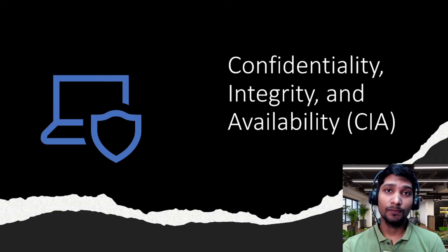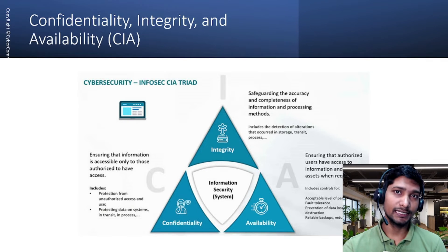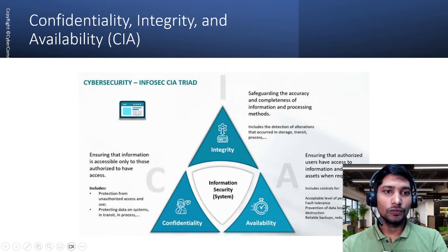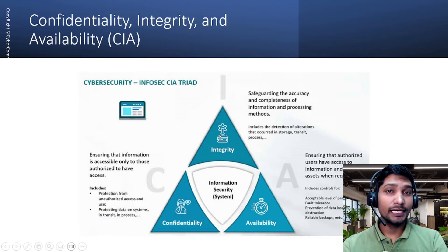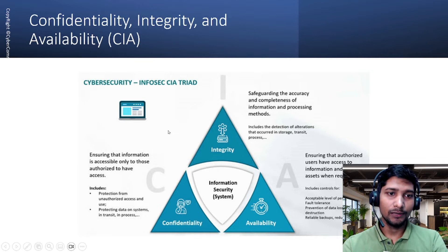Let's start with confidentiality, integrity, and availability — the CIA triad, one of the main pillars of information security. As you can see here, the triad consists of integrity, availability, and confidentiality. Let me take each one with an example.